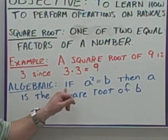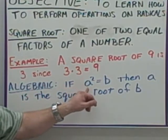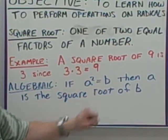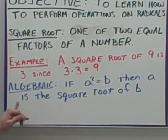Algebraically, this is written as: if a squared equals b, then a is the square root of b.